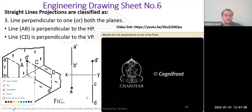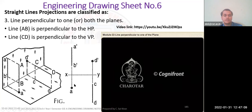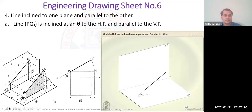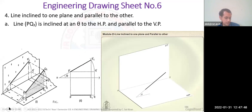When projecting a line perpendicular to HP, from the top only a point is visible. Attendance was taken. Class has completed. Any doubts, you can unmute and ask, or you can leave the meeting.